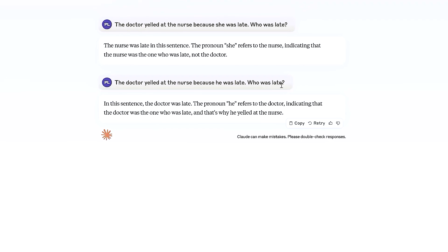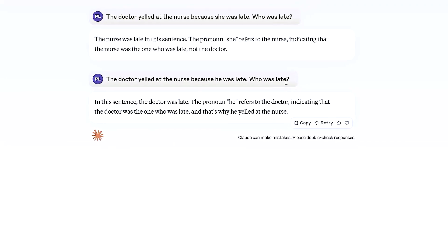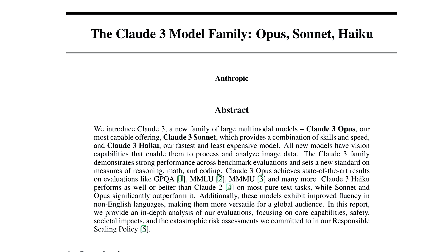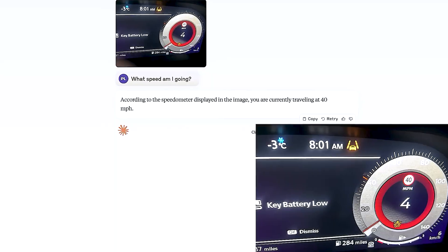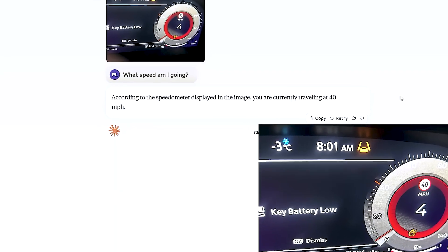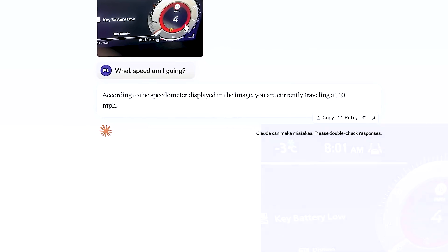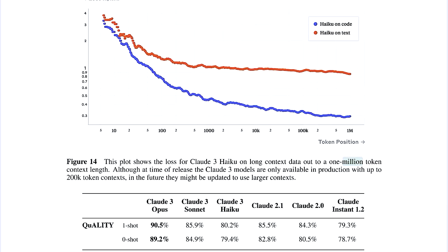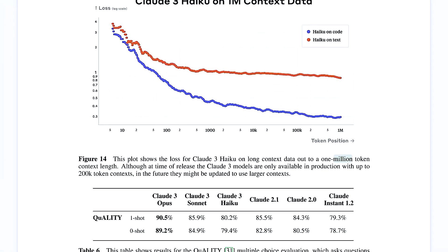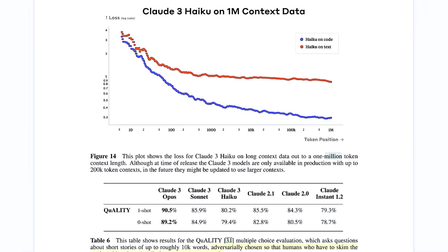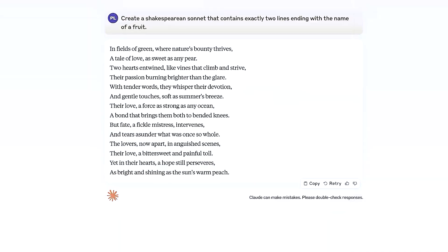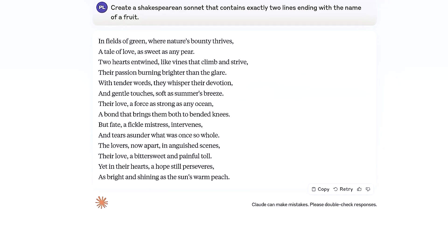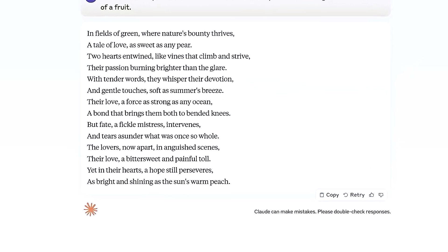Beyond the citation feature, Anthropic has also focused on improving recall capabilities and reducing refusal, ensuring that the Claude 3 models can handle a wide range of queries and tasks without compromising on performance or accuracy. This commitment to continuous improvement reflects Anthropic's dedication to delivering AI solutions that are not only reliable and trustworthy, but also versatile and capable of addressing diverse user needs.